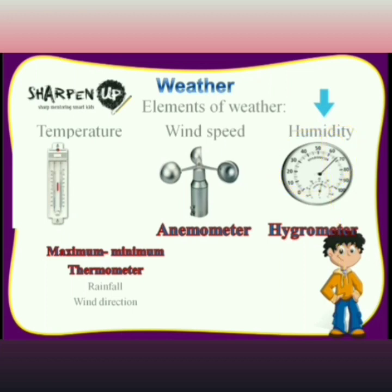Humidity is the amount of water vapor present in the air at a given temperature. Relative humidity is the measure of water vapor present in the air at a specific temperature compared to the maximum water vapor the air can hold at that temperature, and it is represented as a percentage. Relative humidity depends on temperature, so its value keeps changing throughout the day. Humidity is measured with an instrument called a hygrometer.